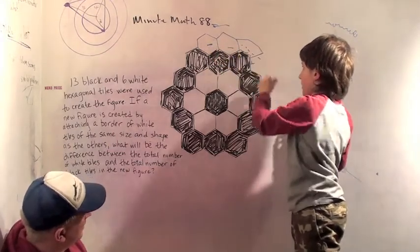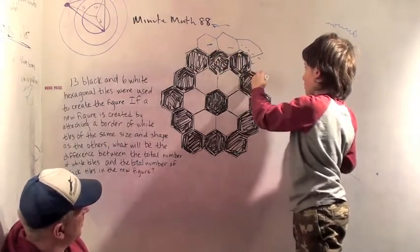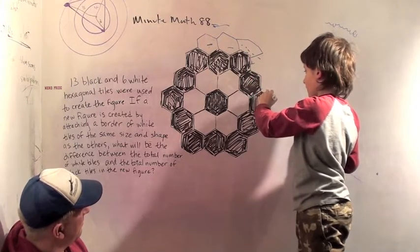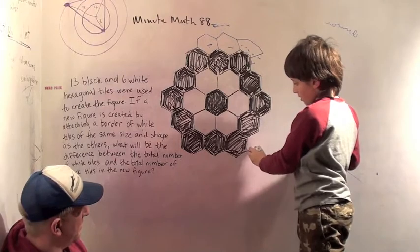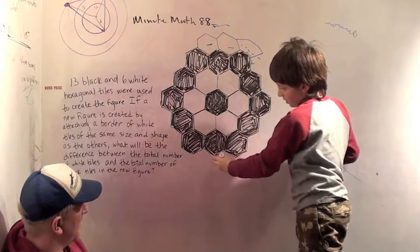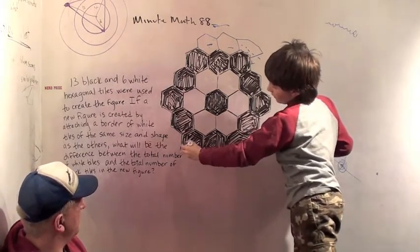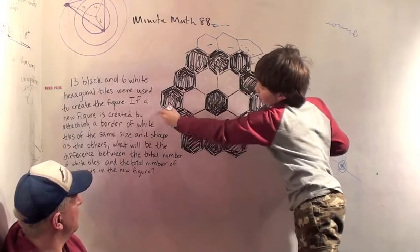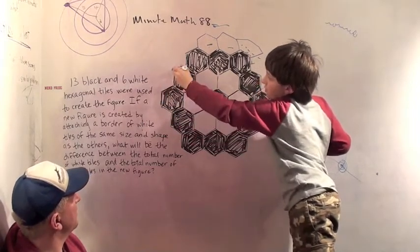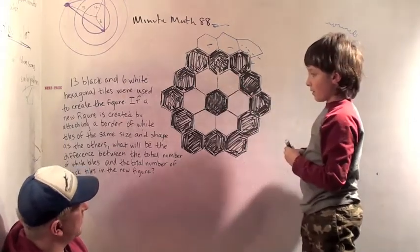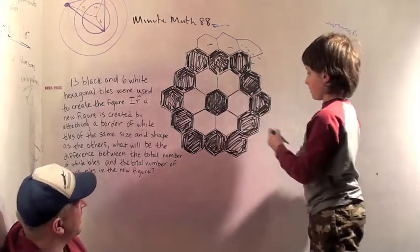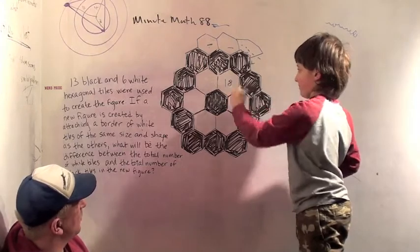One, two, three, four, five, six, seven, eight, nine, ten, eleven, twelve, thirteen, fourteen, fifteen, sixteen, seventeen, eighteen. Eighteen. So why don't you write that down somewhere. It looks like there's going to be eighteen new white tiles.